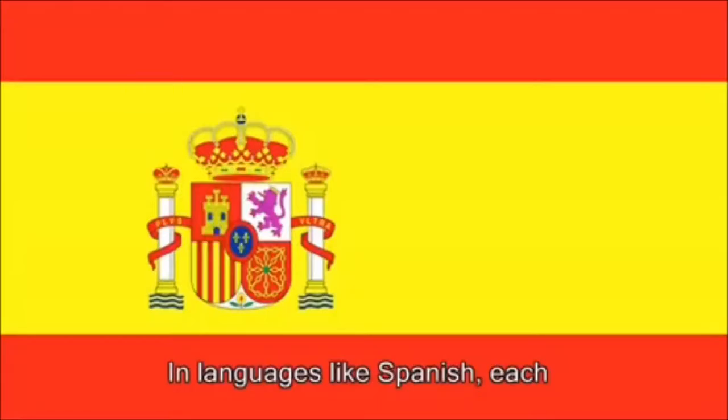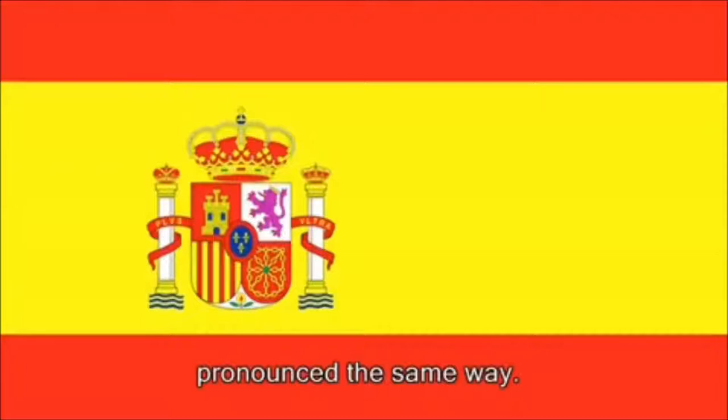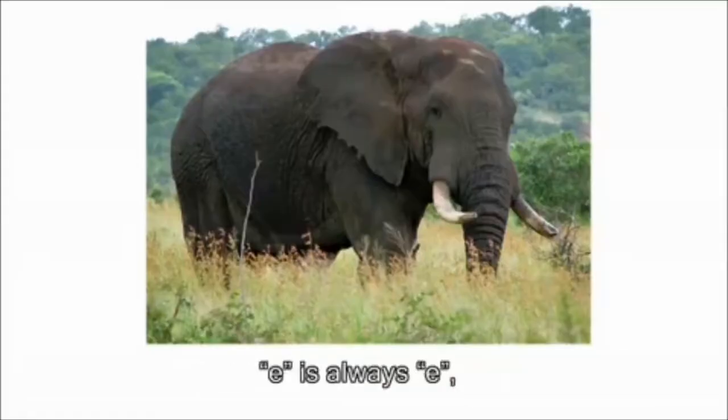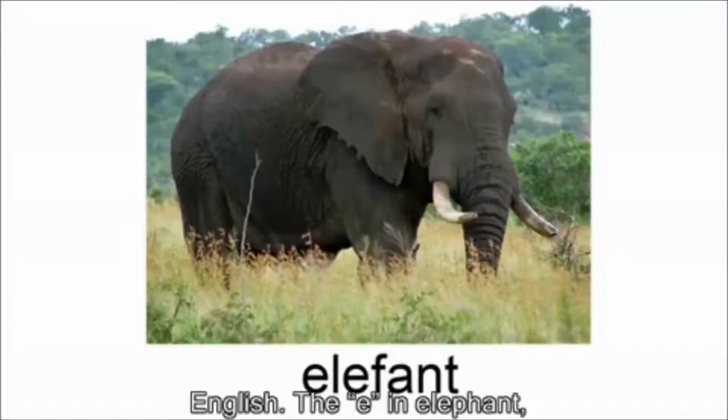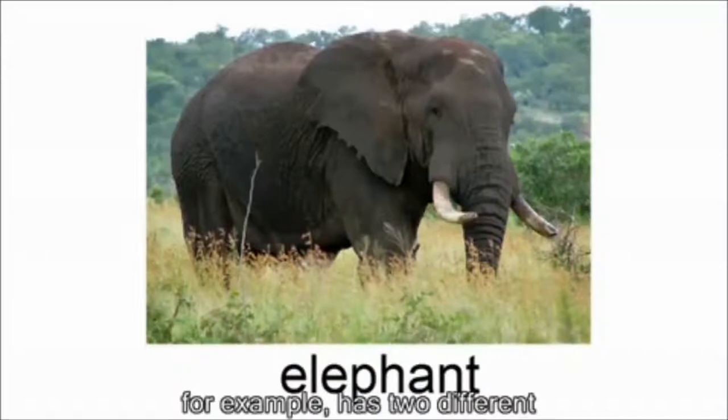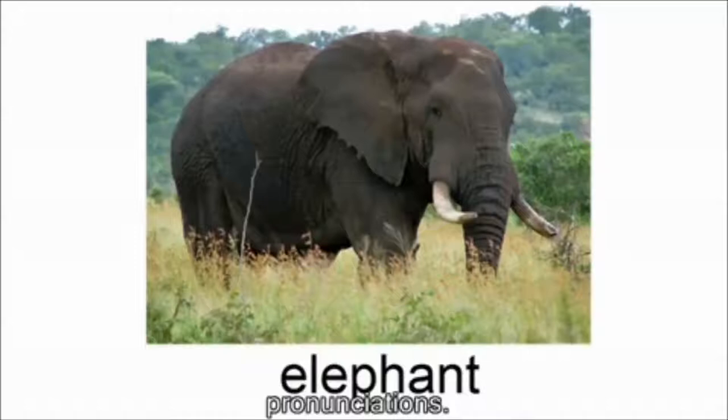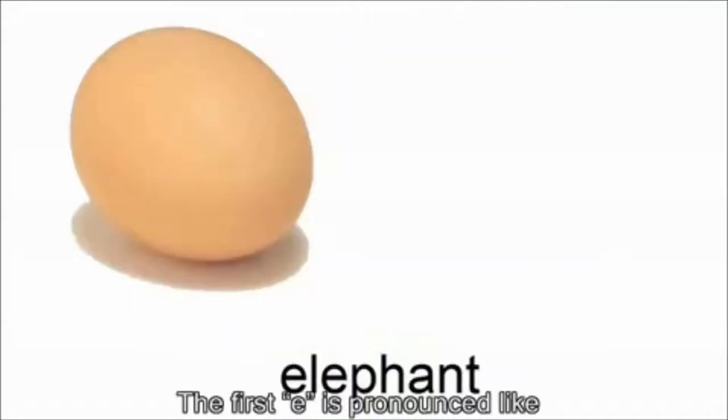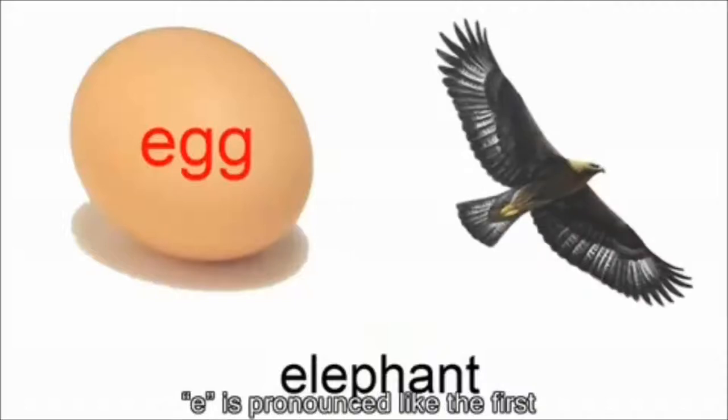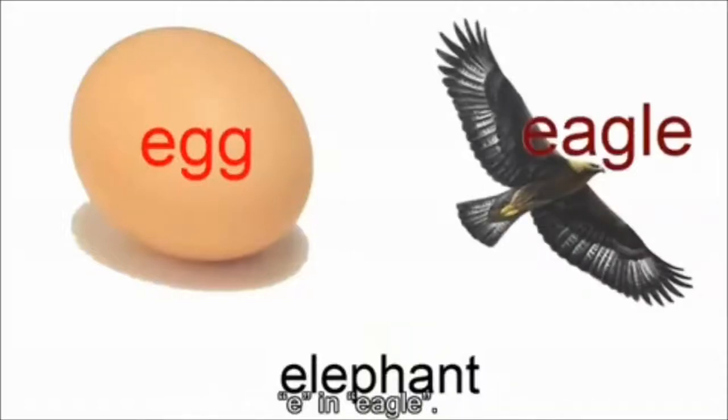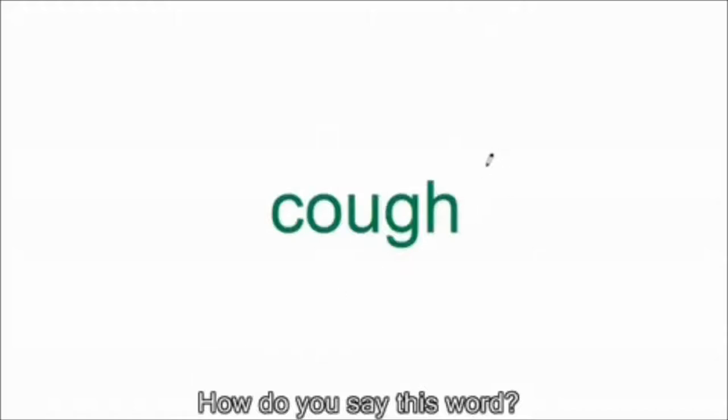In languages like Spanish, each letter of the alphabet is always pronounced the same way. E is always E. But that's not the case in English. The E in elephant, for example, has two different pronunciations. The first E is pronounced like the E in egg, while the second E is pronounced like the first E in eagle. How do you say this word?